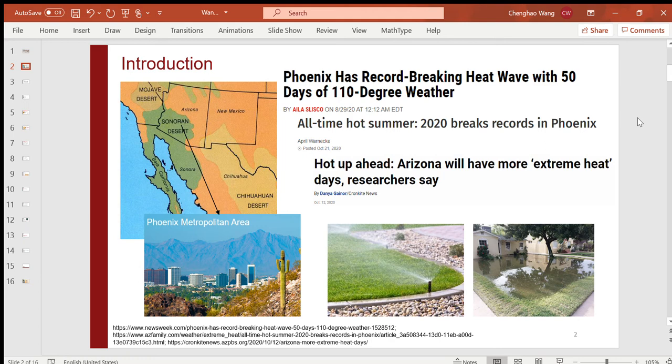The summer there is usually extremely hot. Daily maximum temperature can easily reach 45 degrees Celsius. Last summer also had several record-breaking heat waves. For example, this news used the title Phoenix has a record-breaking heat wave with 50 days of 110-degree weather. Note that 110-degree Fahrenheit is about 43 or 44 degrees Celsius.